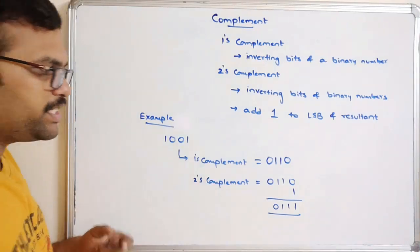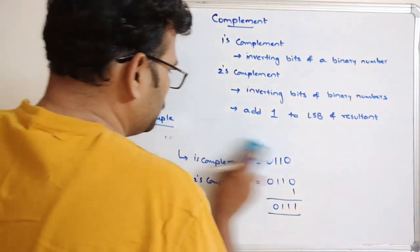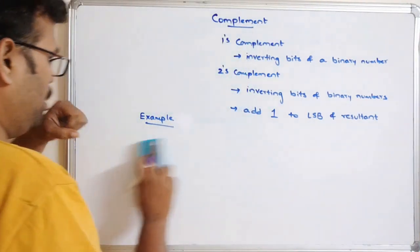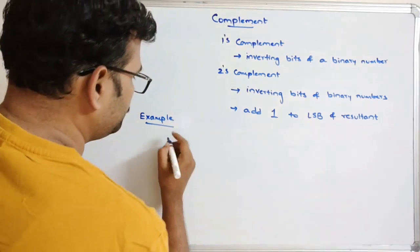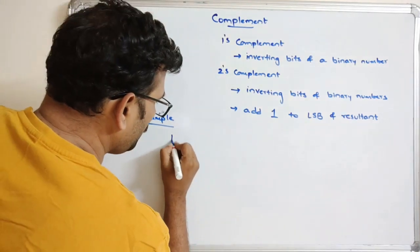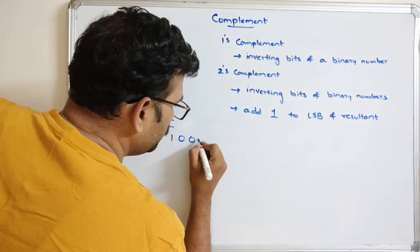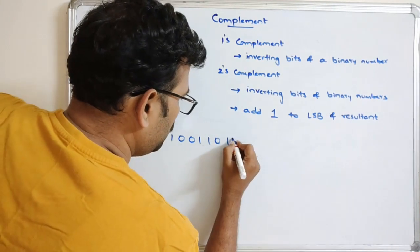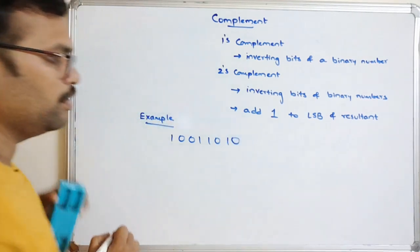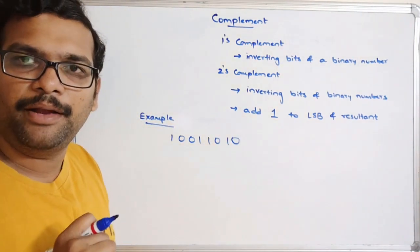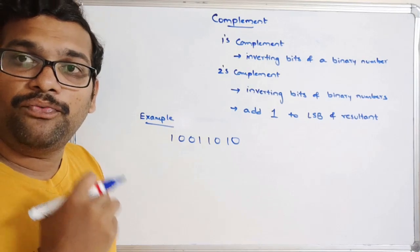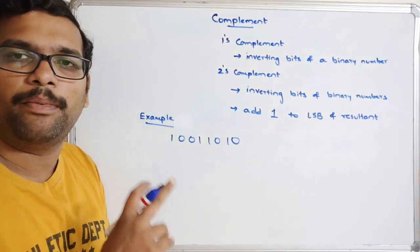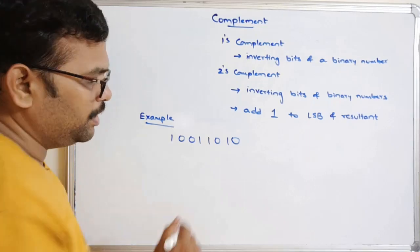Now let us take one more example. The given binary number is 1001101010. We need to find the equivalent 1's complement and the 2's complement for this binary number.